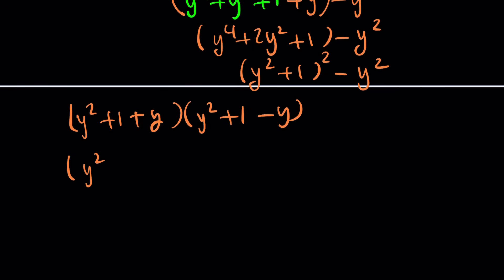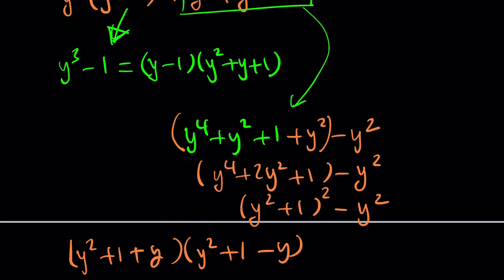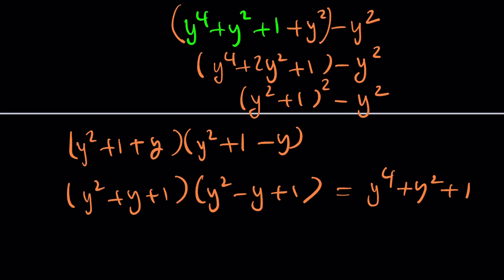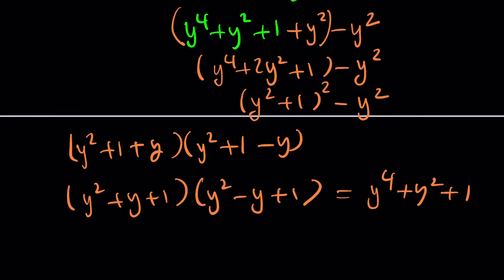Written in standard form, that's y squared plus y plus one times y squared minus y plus one. So it's kind of remarkable, but you should know or even memorize that y to the fourth plus y squared plus one can actually be factored this way. Fourth powers have some interesting properties, and Sophie Germain is another formula that deals with fourth-power polynomials.